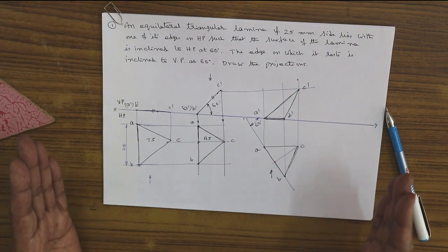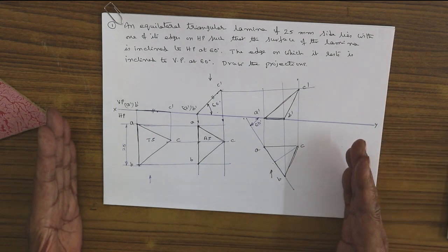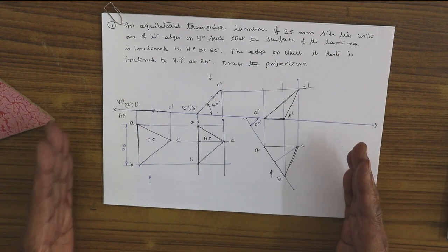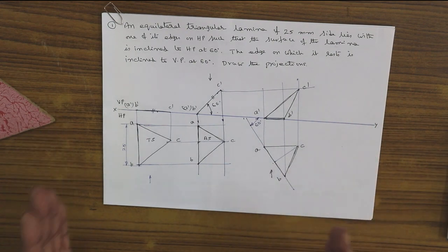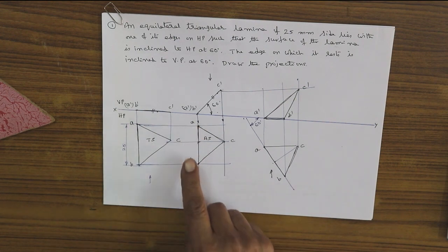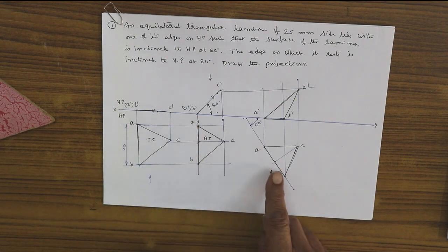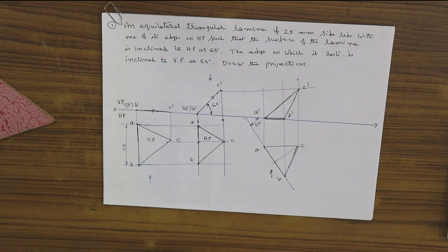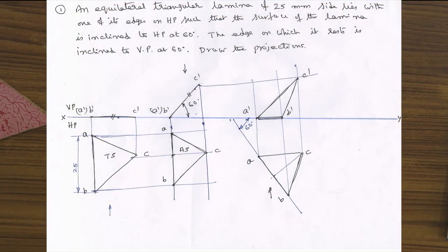This problem is completely solved using this method — when the lamina is standing on HP by a side and the standing side is inclined to VP at a 60-degree angle, and when the light of the surface changes, it also affects the front view.